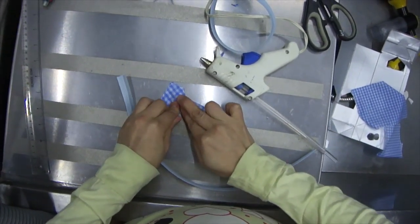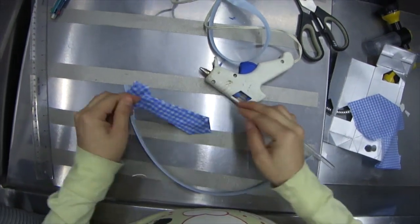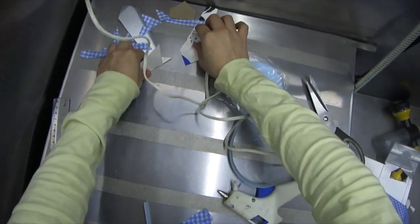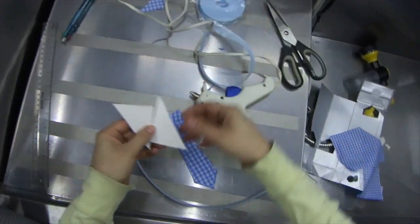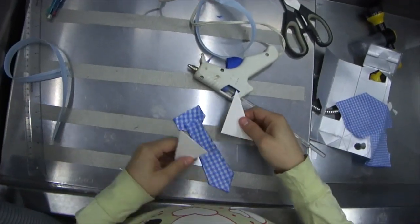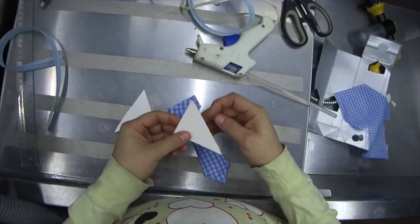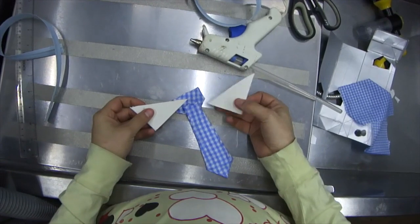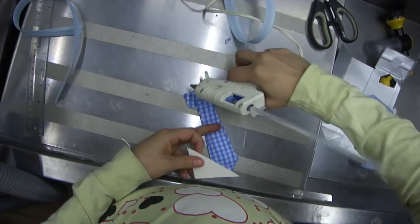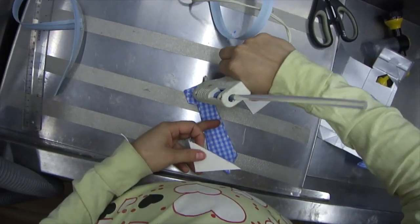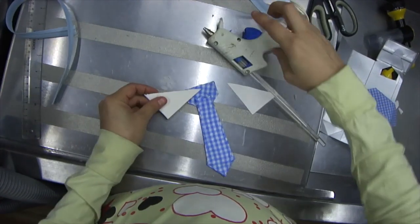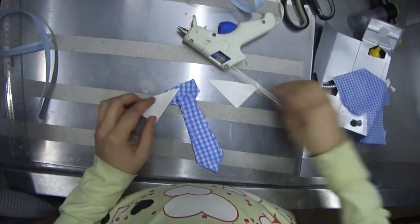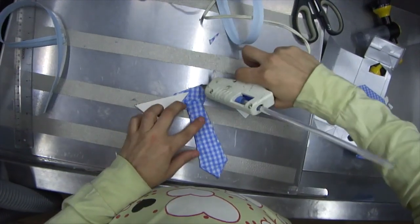All we have to do now is stick everything together with the hot glue gun. We're going to stick the tie under the little piece. Now we're going to use our two triangles, using the longer side to stick onto the little piece. I actually put in a little too much glue and it came through the front, so be careful with that.